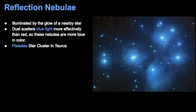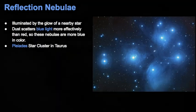The third type of diffuse nebula is the reflection type. This cloud of gas and dust is illuminated by the glow of nearby stars. Reflection nebulae are typically more blue in color because the dust tends to scatter blue light more effectively than red. The Pleiades star cluster in the constellation Taurus is a classic example of this type.